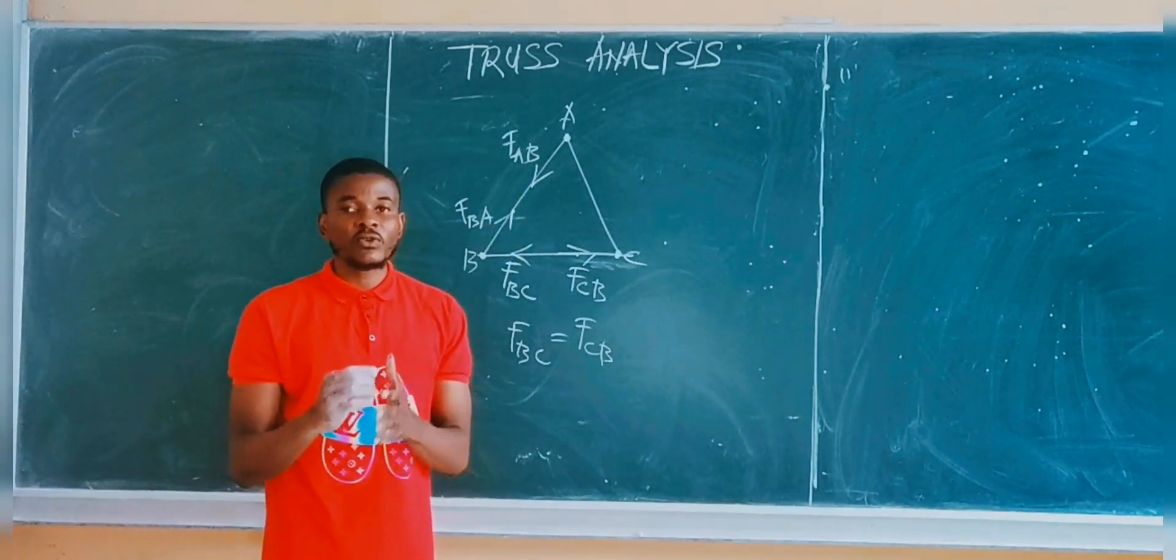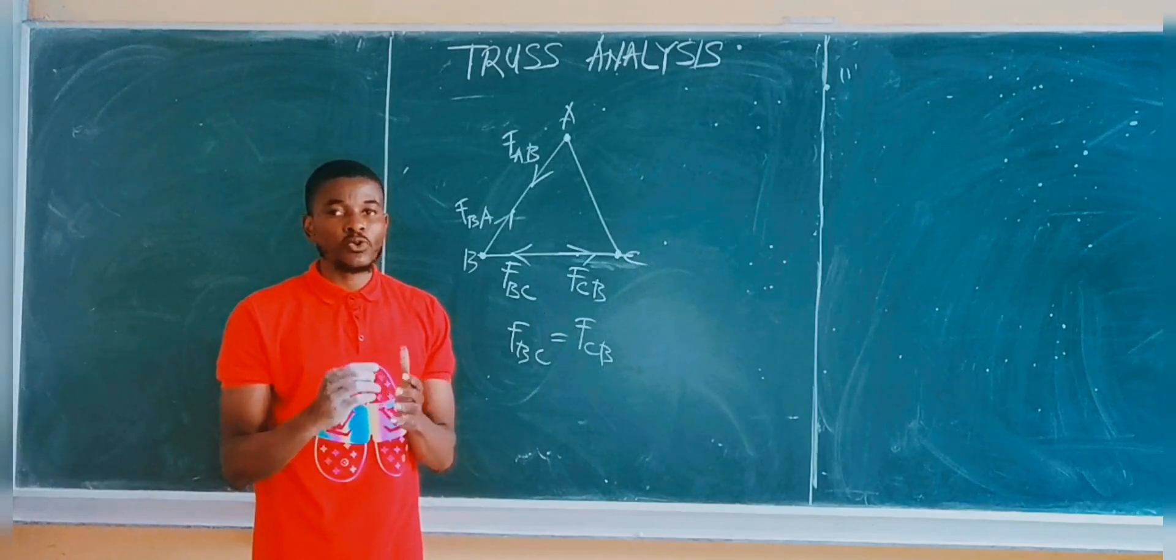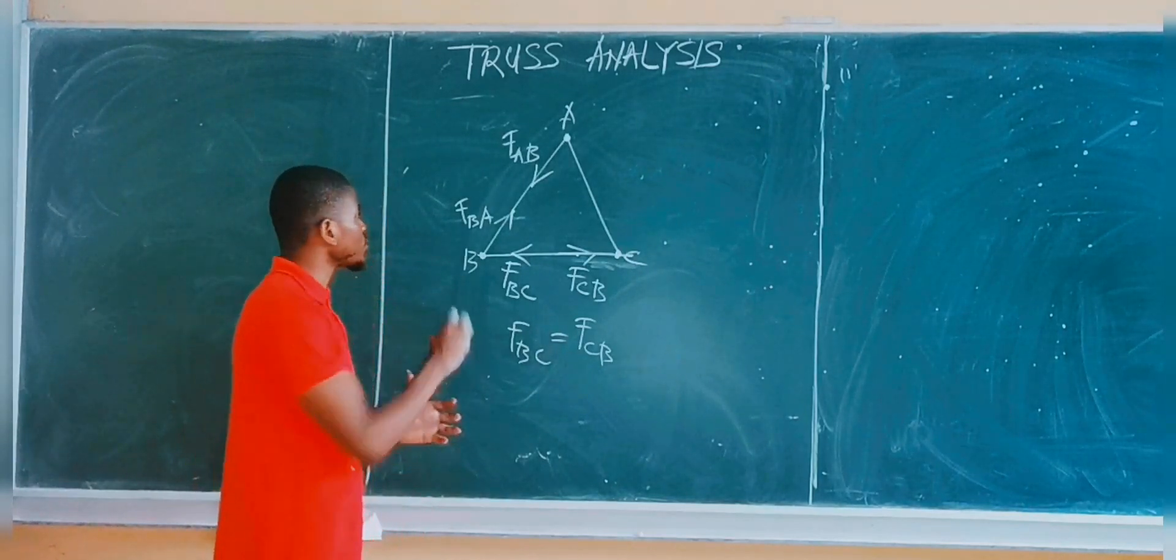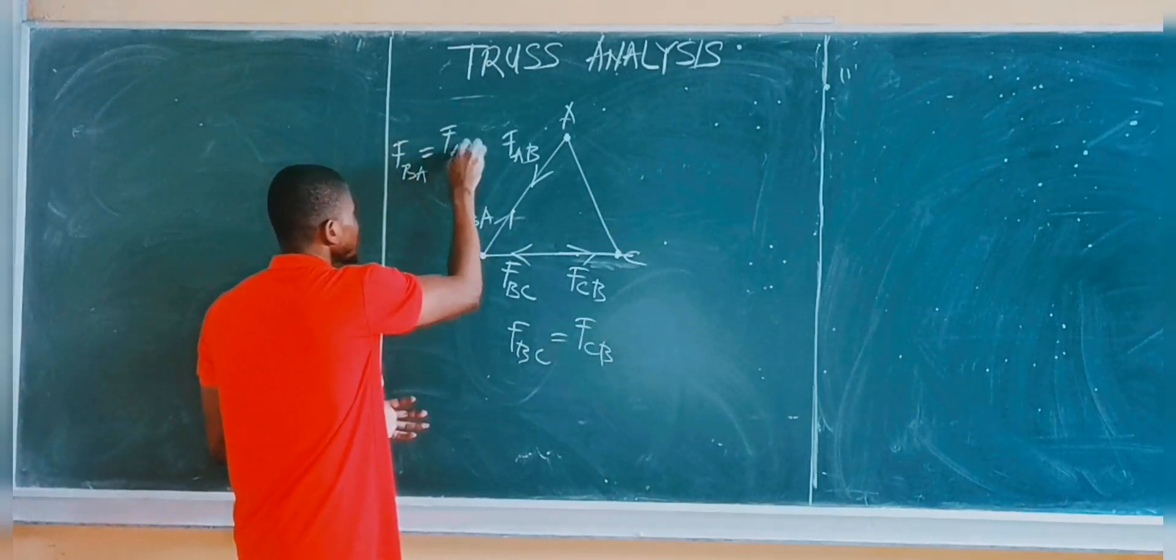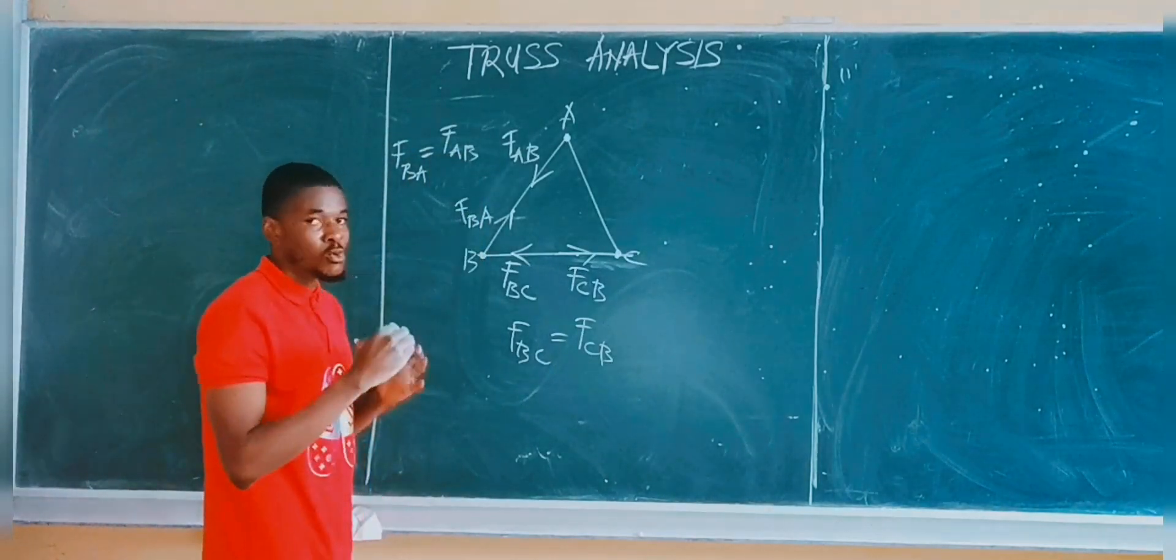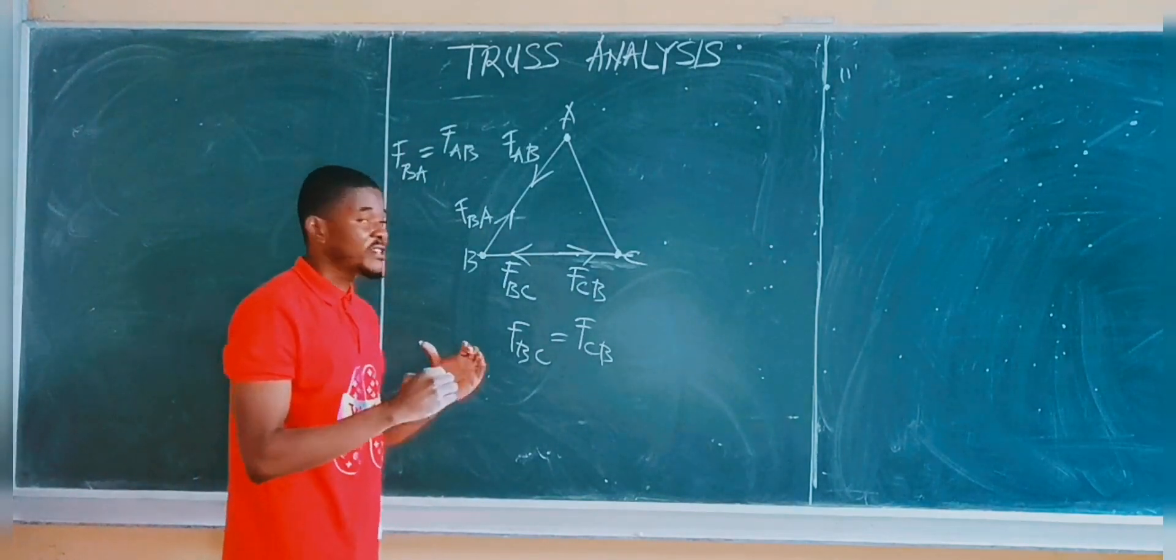So I said every member of the truss system carries two equal but opposite forces. So FBA is equal to FAB. The two forces are equal in magnitude but they are different in direction.